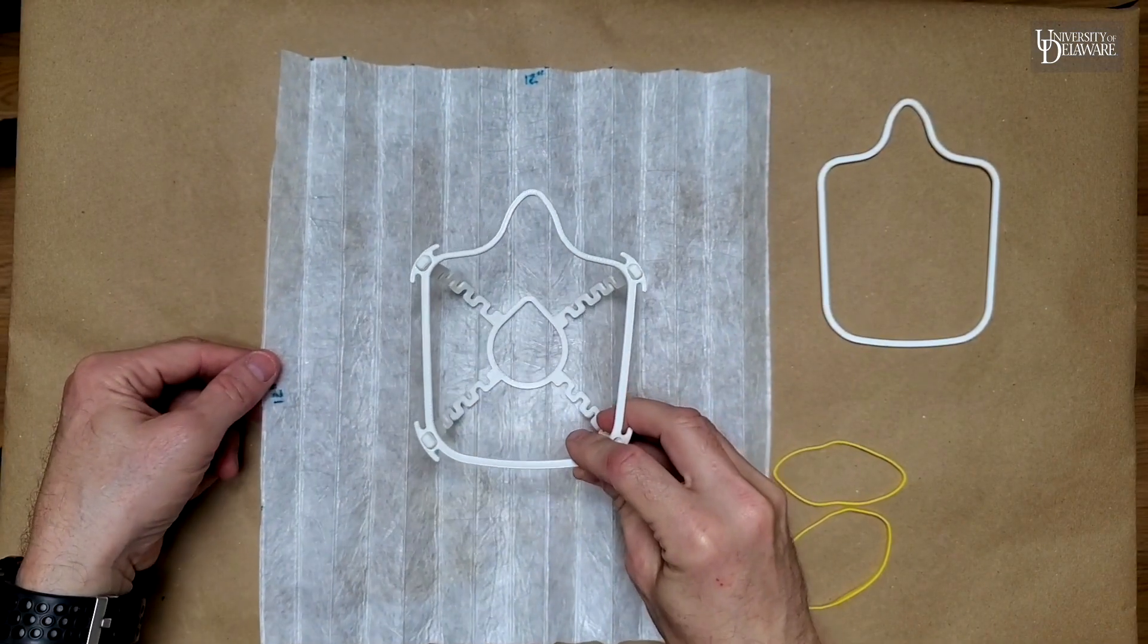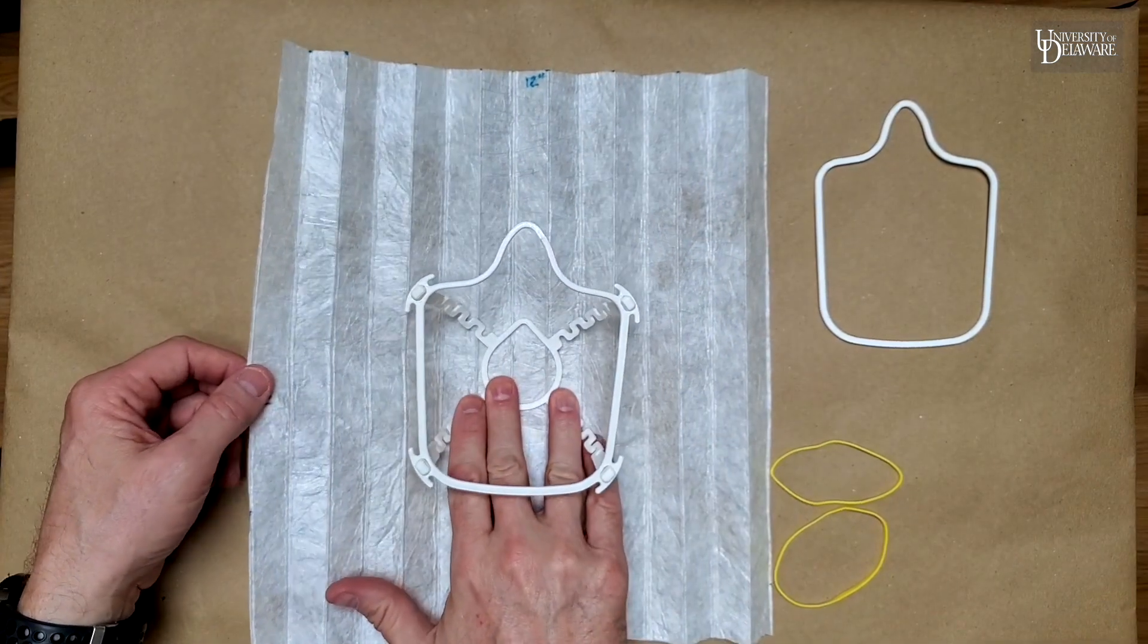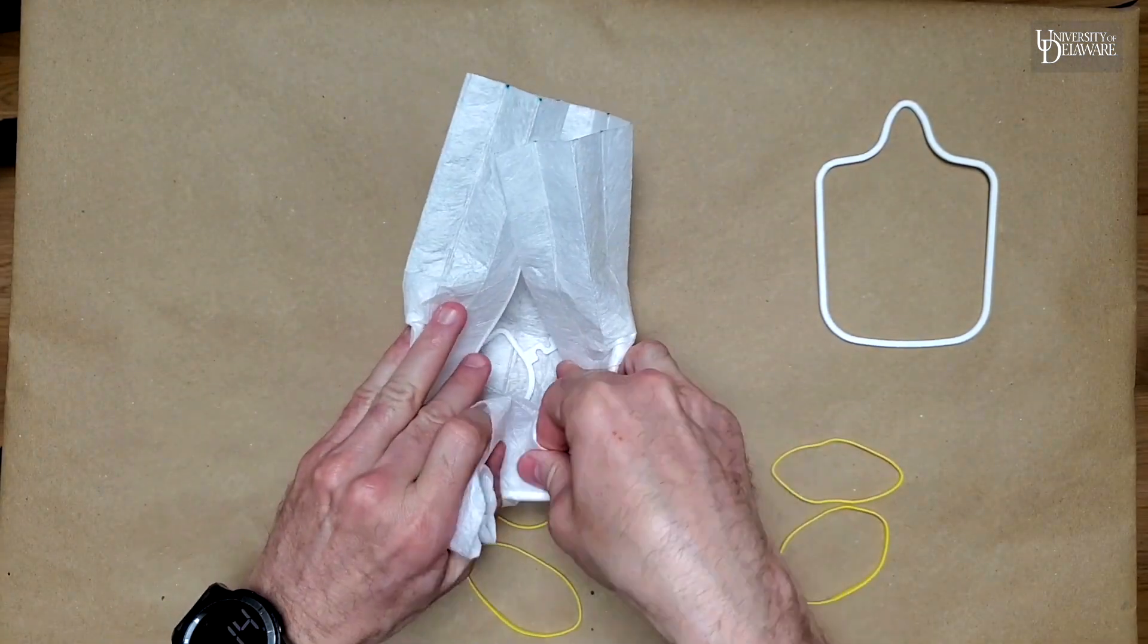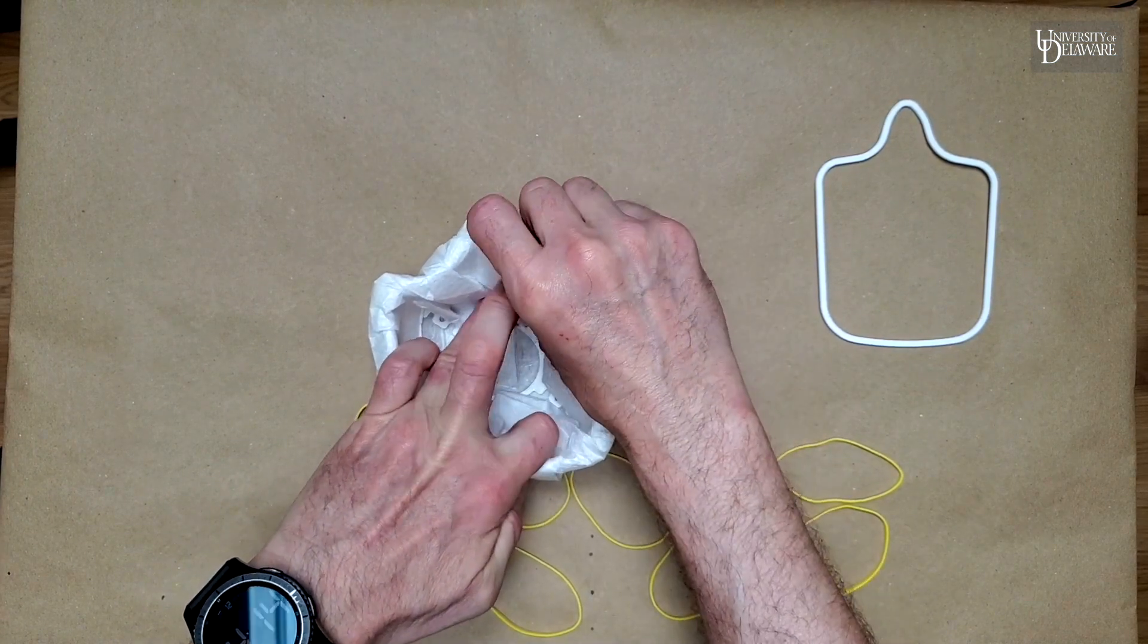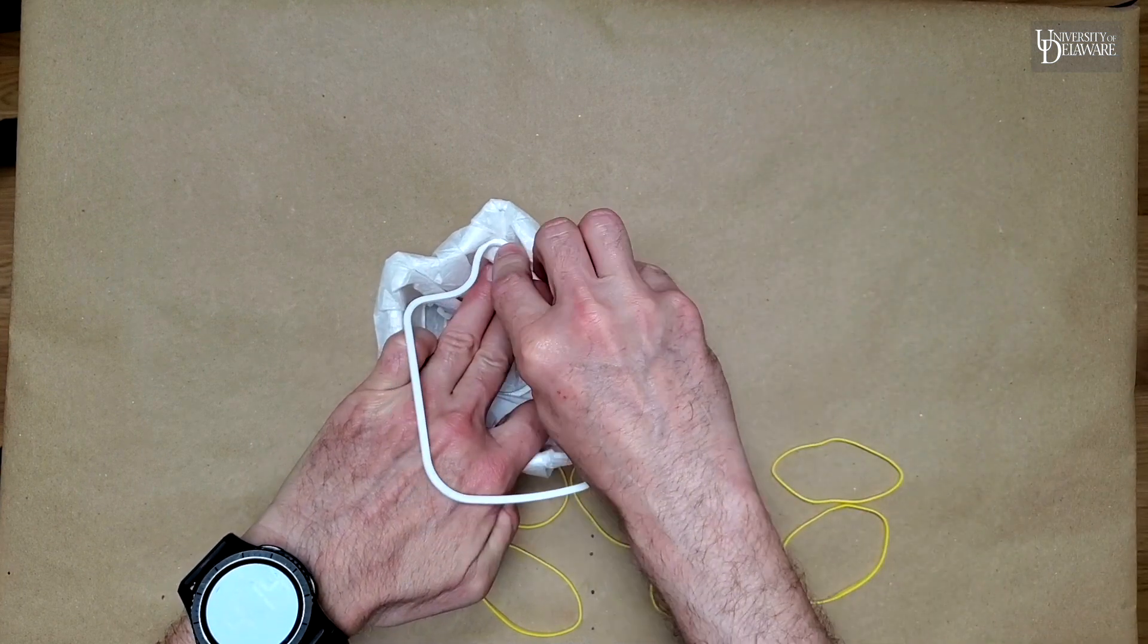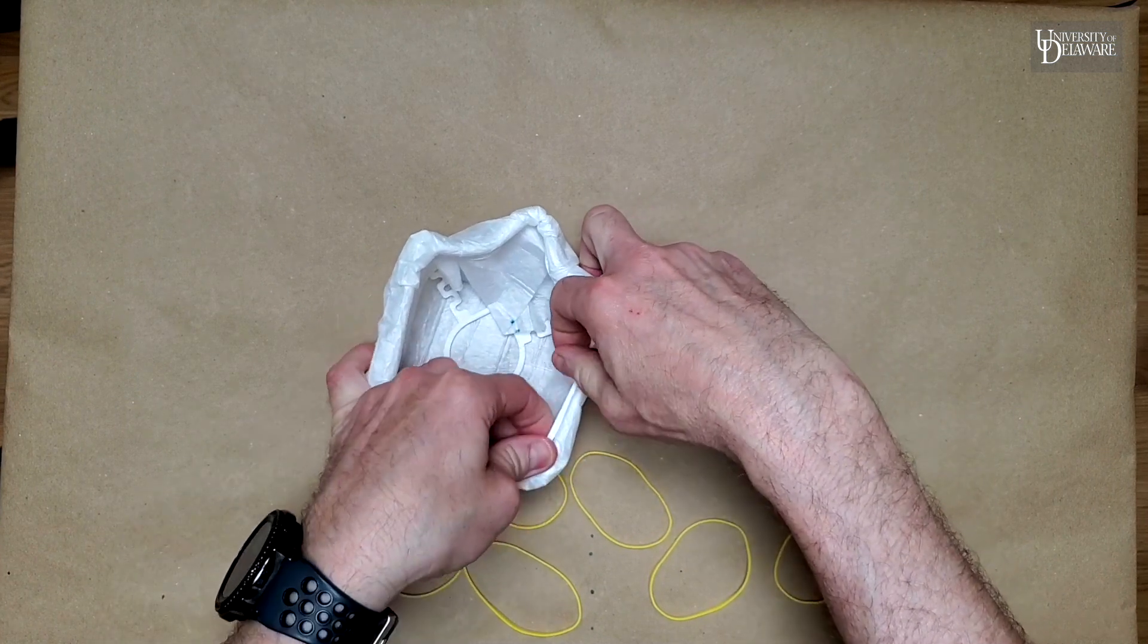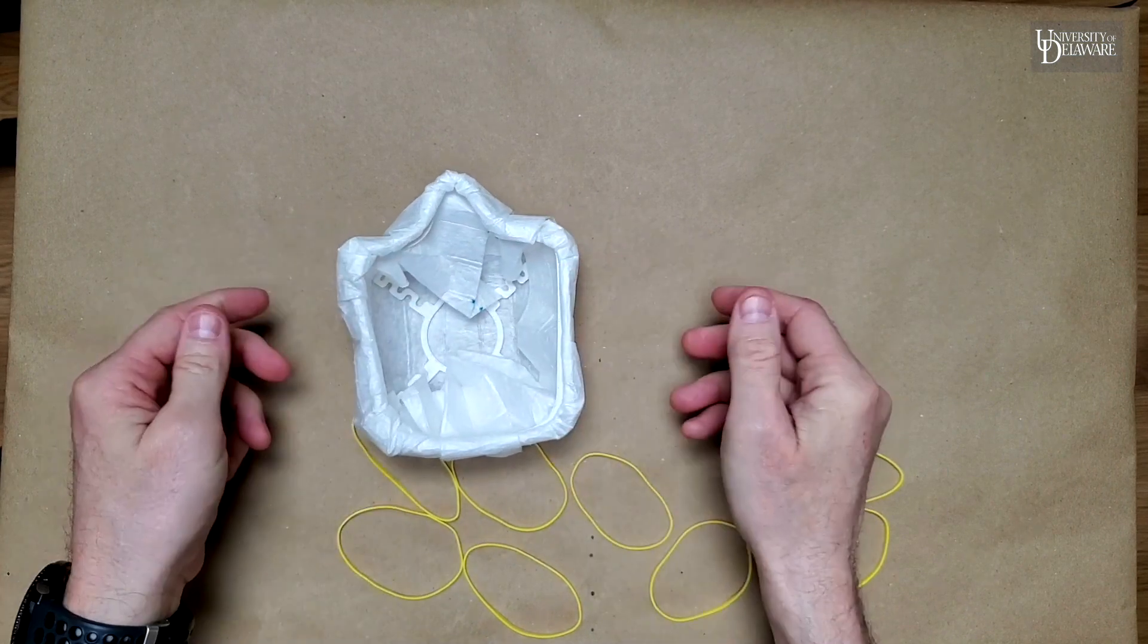Take your 12 inch by 12 inch swatch of filter material. Place your assembled frame in the middle. Start folding it over like you're wrapping a package. Once everything is folded over like this, take your containment hoop. Tuck it underneath. Just press it into place until it snaps underneath of the frame, like this.